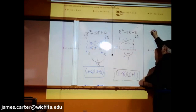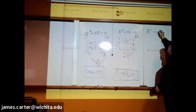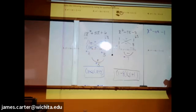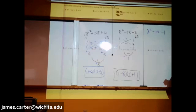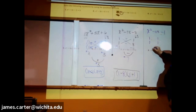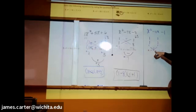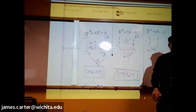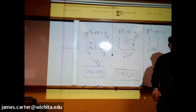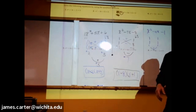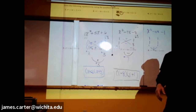Now problem number eight: x squared minus 4x minus 1. We have a one and a one for the first terms, and the only possibility for c is one and one. Because of the different-signs rule we'd subtract, but one minus one gives zero, which does not match the middle term. So this problem is what we call prime — there are equations which cannot be factored. We'll learn ways to deal with them a little later in the course.